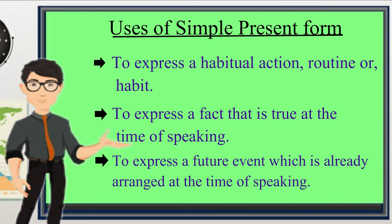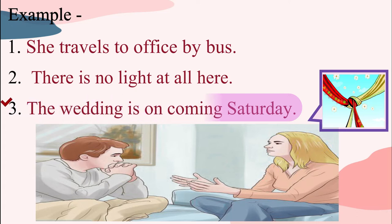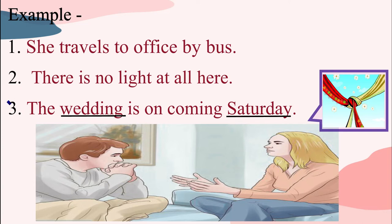An example is: the wedding is on coming Saturday. It may seem that it is a future time — the coming Saturday — but the form is simple present. When the speaker is speaking the sentence, he is speaking at the moment about an event which is to come at some future time. And this future time and the event is decided. So the sentence 'the wedding is on coming Saturday' is in simple present form.